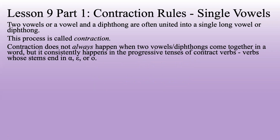We said we'd learn about those in Lesson 9 — and here we are. So if you'll remember back, pretty much any time we saw a circumflex, that happened with liquid verbs in the future. That happened with some of our third declension endings where we had a couple of vowels and they'd blend together. That's what we're talking about.